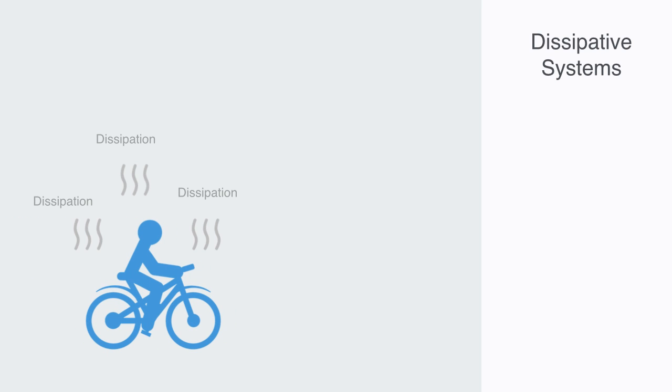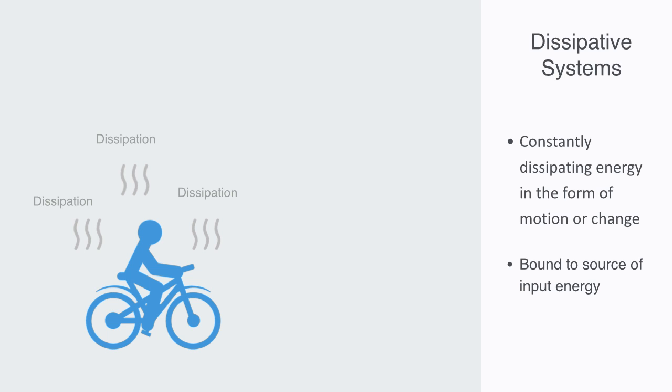All dynamic systems require some input of energy to drive them. In physics, they are referred to as dissipative systems, as they are constantly dissipating the energy being inputted to the system in the form of motion or change. A system in this periodic motion is bound to its source of energy, and its trajectory will follow some periodic motion around it, or towards and away from it. In our example of the planet's orbit, it is following a periodic motion because of the gravitational force the sun exerts on it. If it were not for this driving force, the motion would cease to exist.